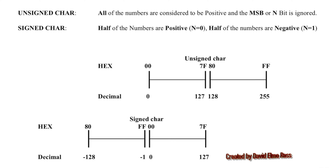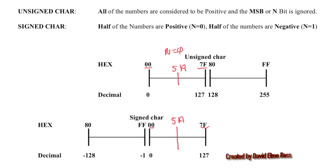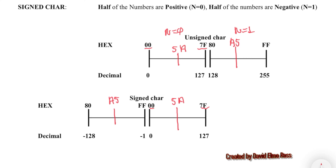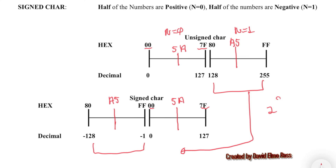If we pick any number in the range where n equals 0, from 00 to 7F — say, 5A — it will have exactly the same value 5A in exactly the same place in both the unsigned and signed systems. However, if we pick a number like A5, which is in the range where n equals 1, it's different between the two systems. All the numbers from 80 to FF are offset by a factor of 2 to the 8th, which is 256 places — as if 80 through FF has been shifted 256 positions to the left to give us negative numbers.